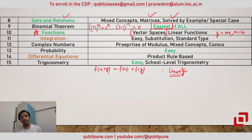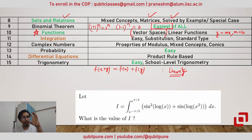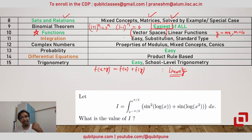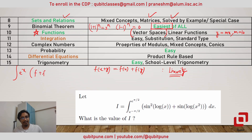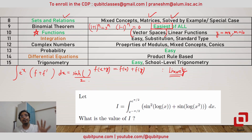Question number eleven was on integration. Because the number of questions in IAPT is small, they fit all possible topics in. This integration question had definite integration with upper and lower limits, substitution, and it boiled down to the integral of the kind e^x(f + f'). At the end, the definite integral can actually be expressed as hyperbolic sine of pi/2 divided by 2 — an interesting connection with hyperbolic functions.